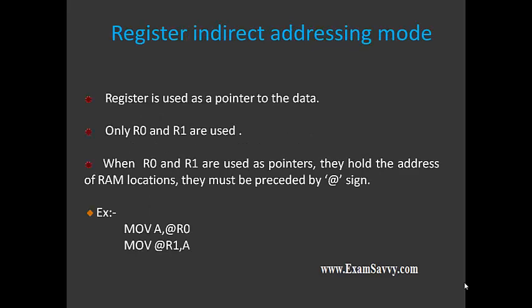The fourth one is register indirect addressing mode. This is how we can access the RAM memory location using register indirect addressing mode. Here the registers are used as a pointer to access the data. In this mode, only registers R0 and R1 will be used — the rest of the registers are not supposed to be used in 8051. R0 and R1 act as pointers holding the address of a particular location in RAM memory. This addressing mode is identified in an instruction by the @ symbol. If there is an @ symbol in the instruction, then we can say it is register indirect addressing mode.